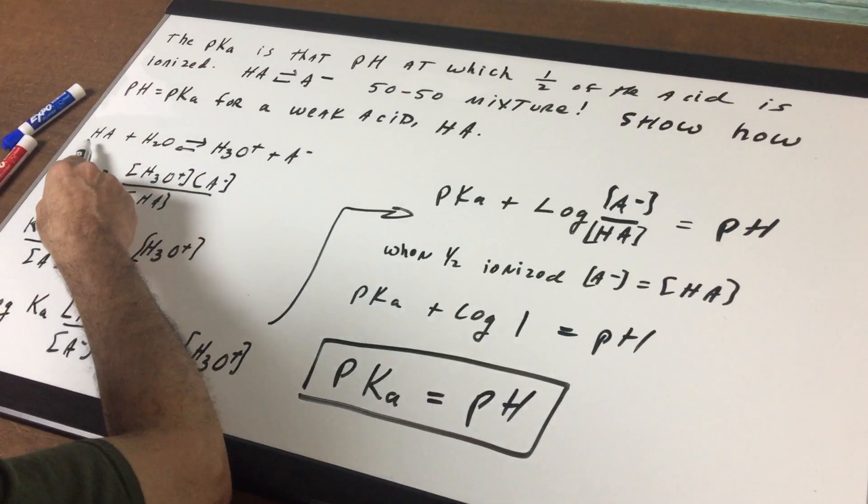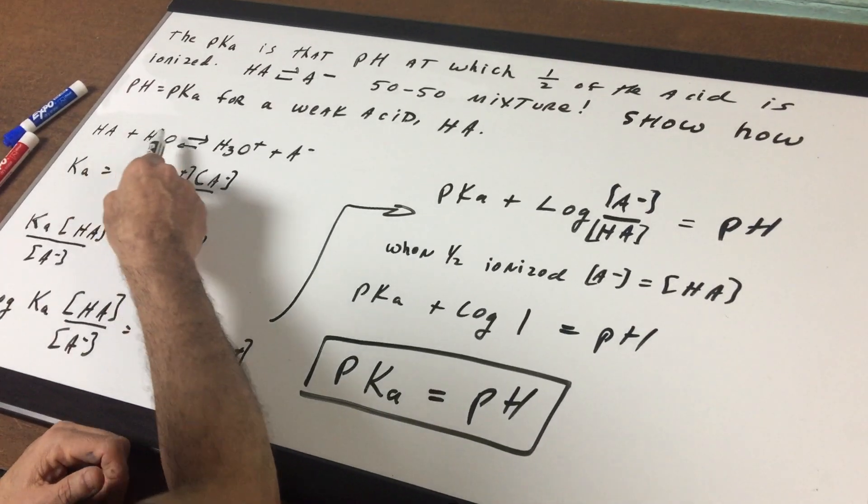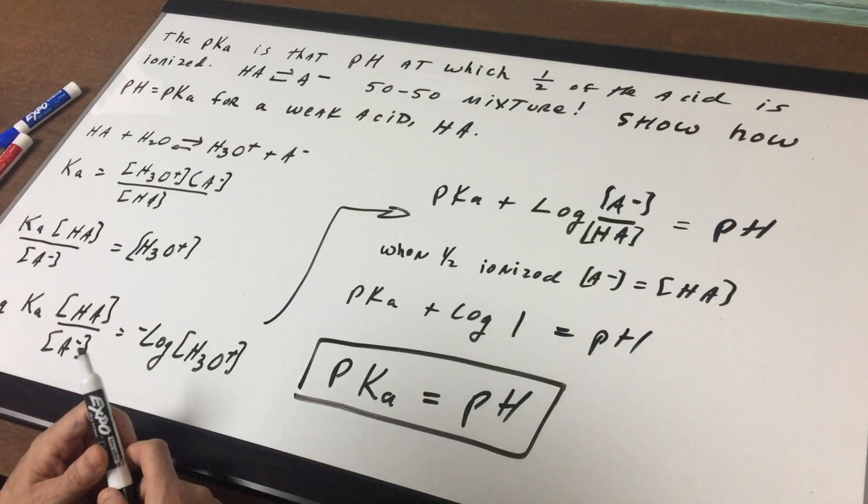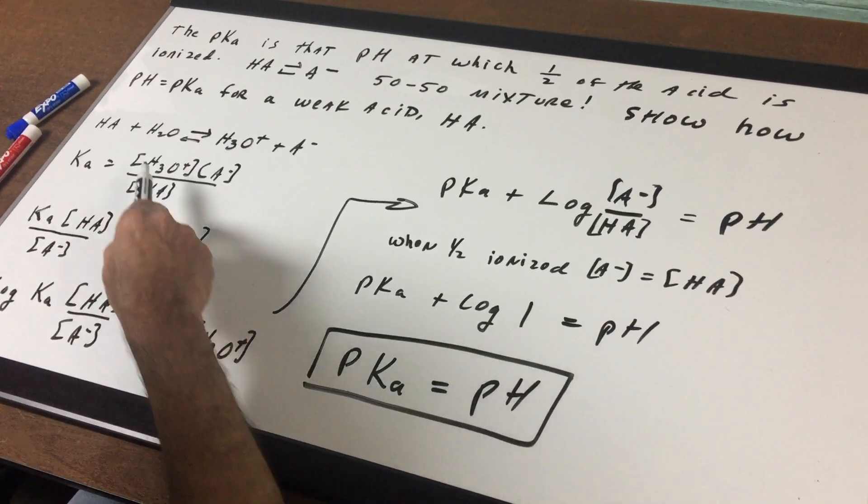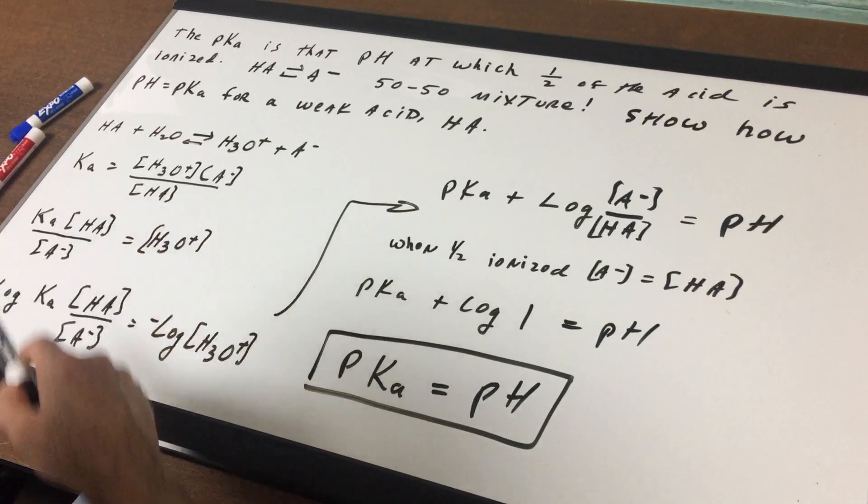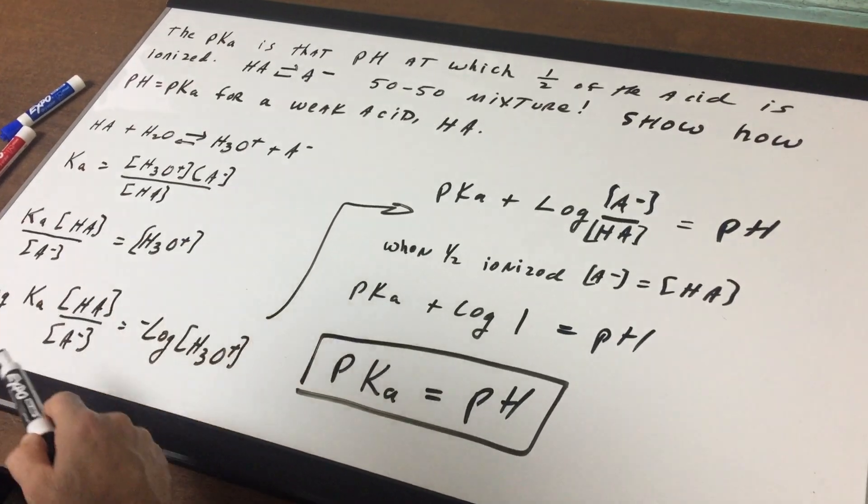The way you would approach this is first write the reaction, put it in water. HA plus water gives H3O plus the A minus, and I write the Ka expression. The Ka is equal to the hydronium times the conjugate base A minus over HA.